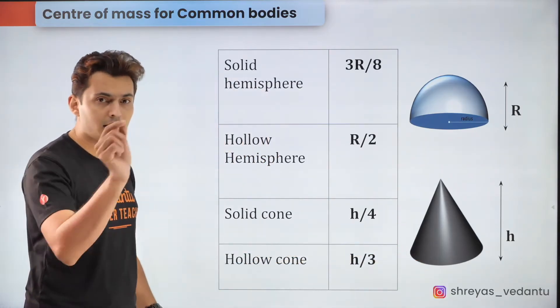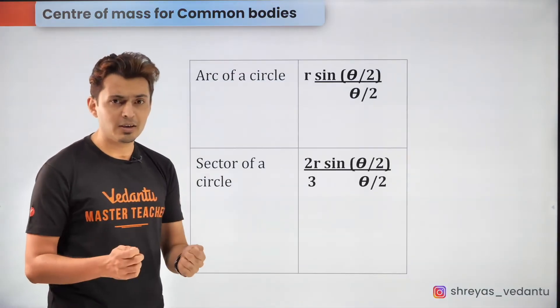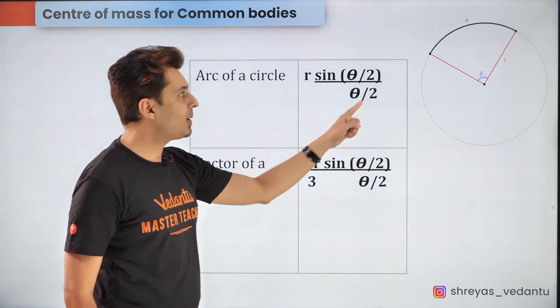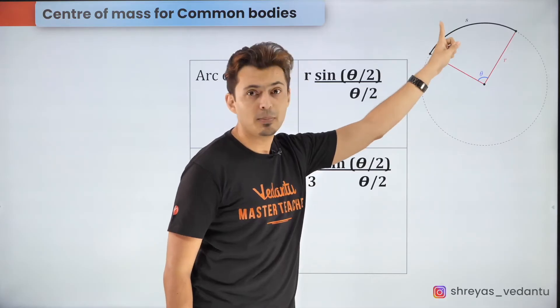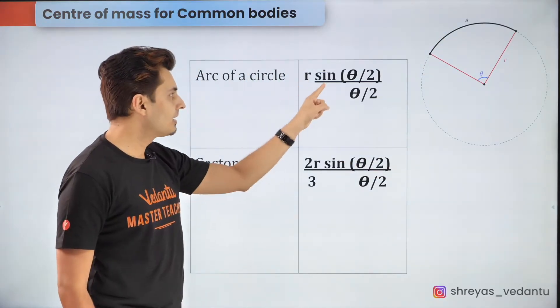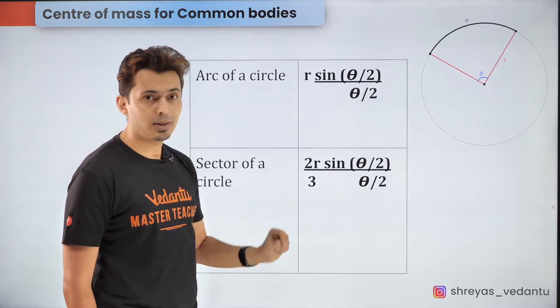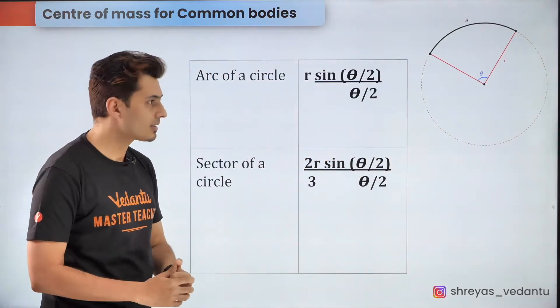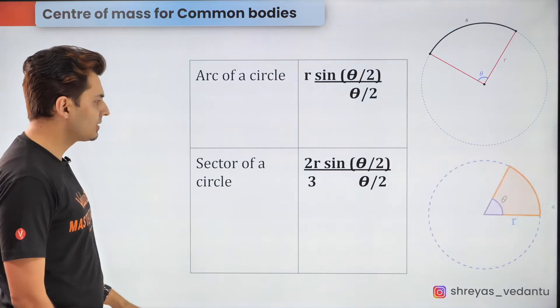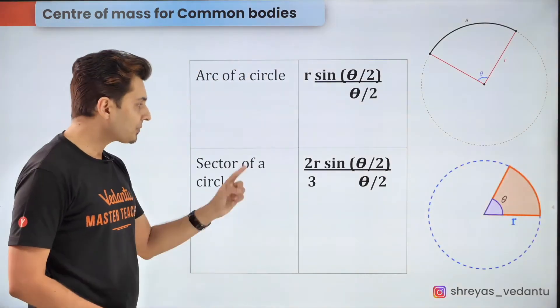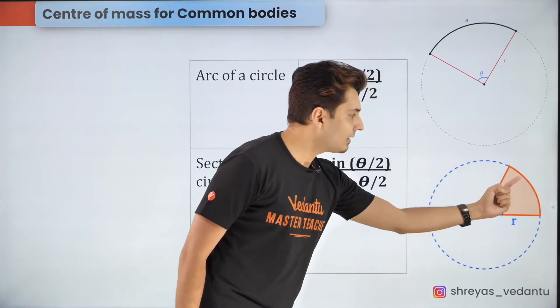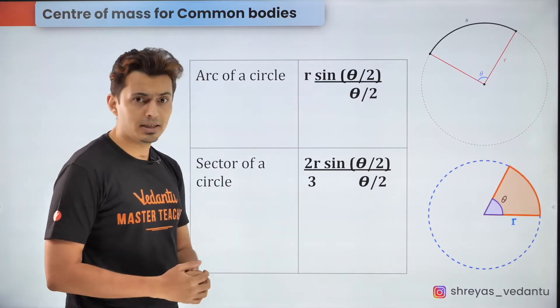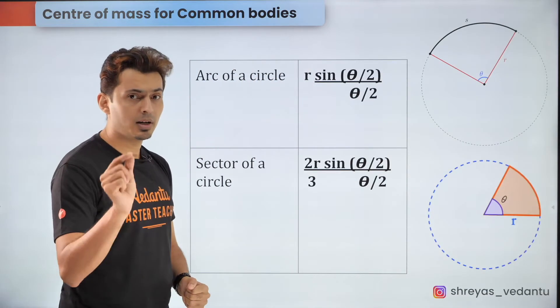Now imagine somebody gave you a pizza without eating the crust that becomes the arc of a circle and the center of mass for such an arc lies on the angle bisector at a distance of r sin theta by 2 divided by theta by 2 where the distances are to be measured from the center and theta is in radians. Now imagine you got a pizza slice the center of mass again lies on the angle bisector and it is at a distance of 2r by 3 into sin theta by 2 divided by theta by 2 again measured from the center and remember theta is in radians.